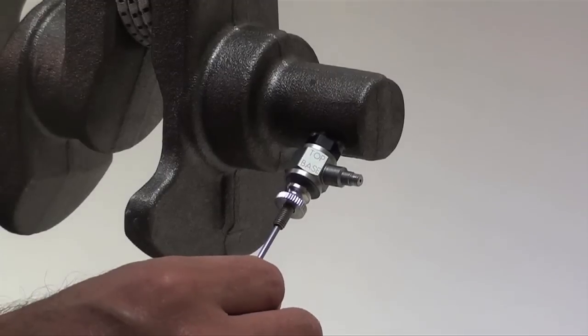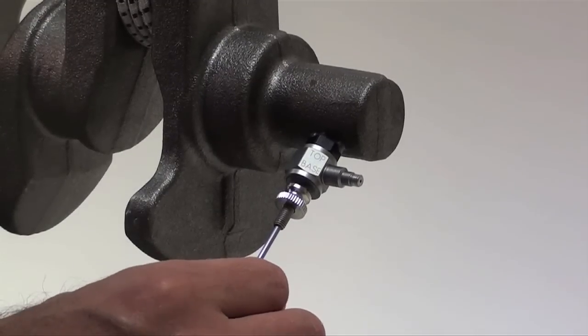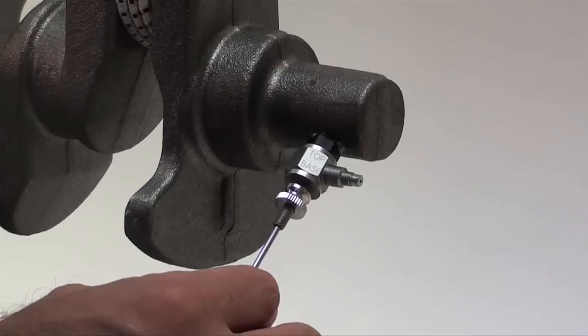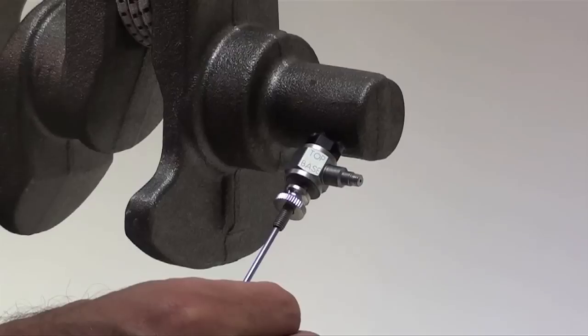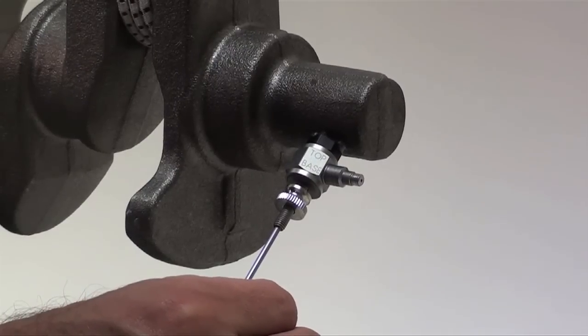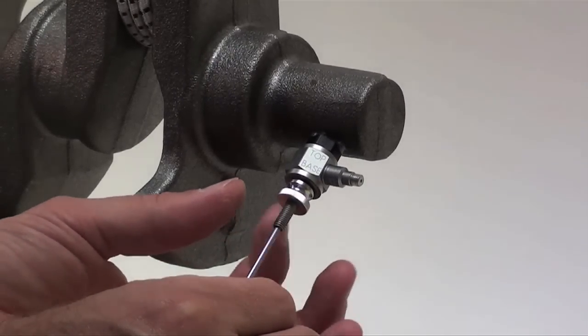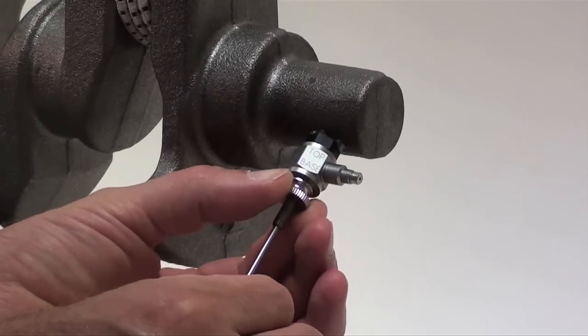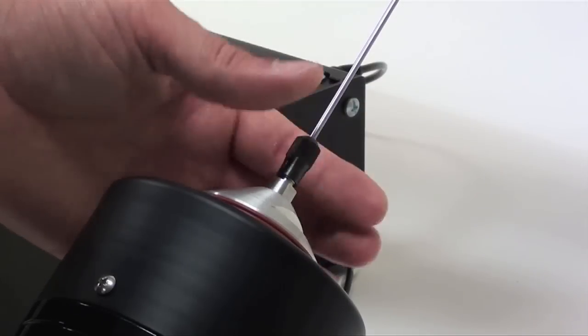So you want to tighten the threaded portion of the stinger into the load cell until it bottoms out, and then back it off by maybe half a turn. And then we'll go ahead and tighten the lock nut. And we need to tighten the stinger in the collet.